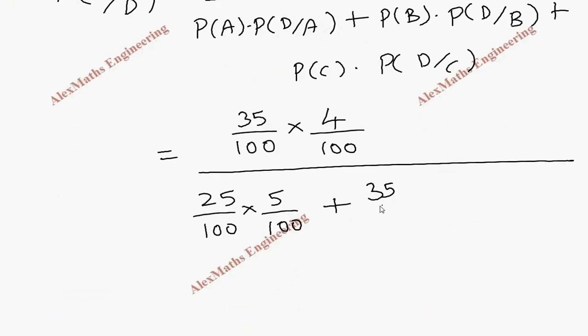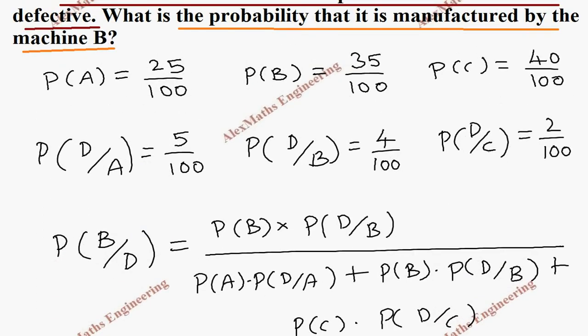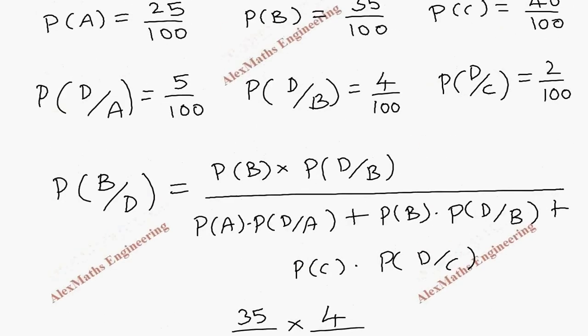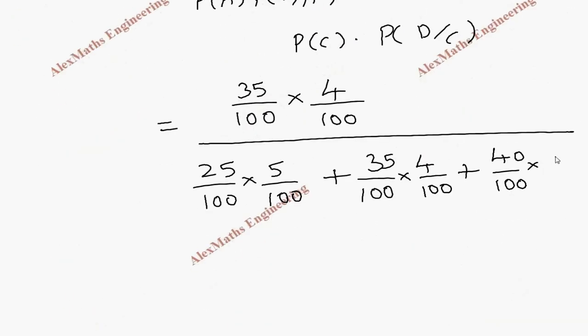It is the same term, 35 by 100 into 4 by 100, and P(C) is 40 by 100. So, 40 by 100 into P(D/C) is 2 by 100. So, 2 divided by 100.